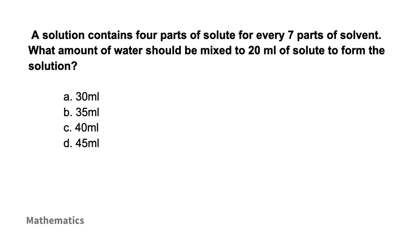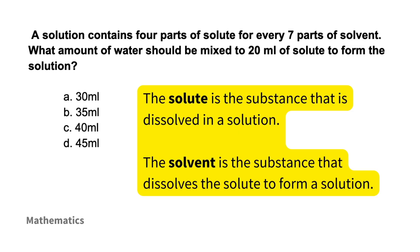To find the amount of water, or solvent, that should be mixed with the solute to form the solution, we can set up a proportion. Remember that the solute is the substance dissolved in a solution, and the solvent is the substance that dissolves the solute. So to find the amount of water that should be mixed with the solute using the given ratio, we use this proportion.